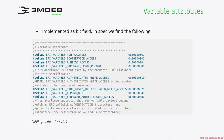As we already know, each UFI variable consists of identifying information and attributes. Identifying information consists of VendorGUID and VariableName. Those parameters are provided when using setVariable and getVariable UFI runtime functions.